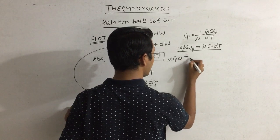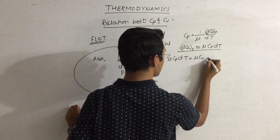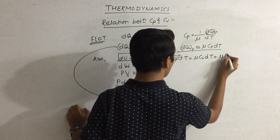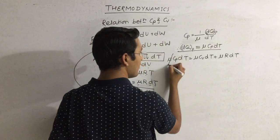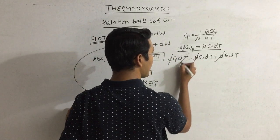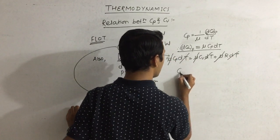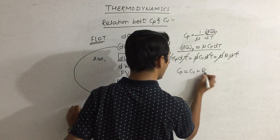n Cp dT is equal to n Cv dT plus n R dT. Cancelling n and dT from both sides, we get Cp is equal to Cv plus R.